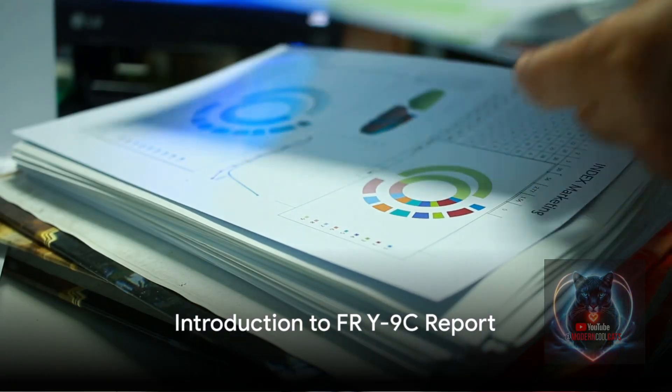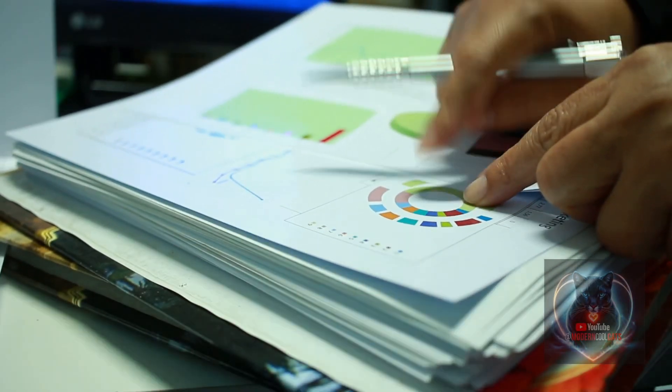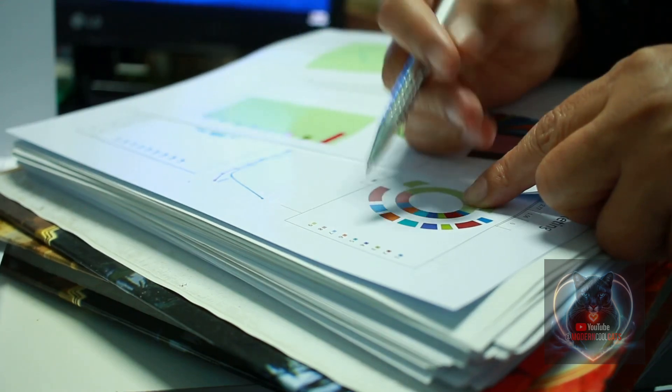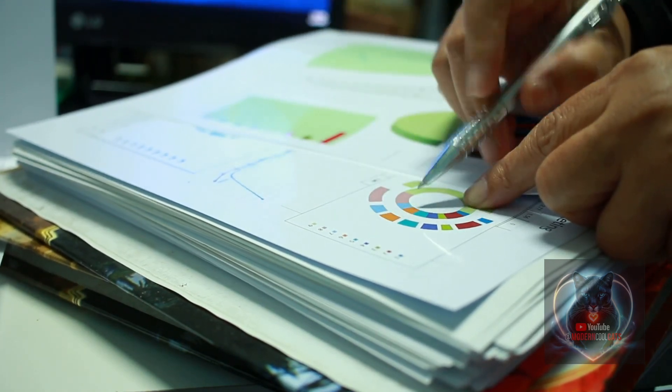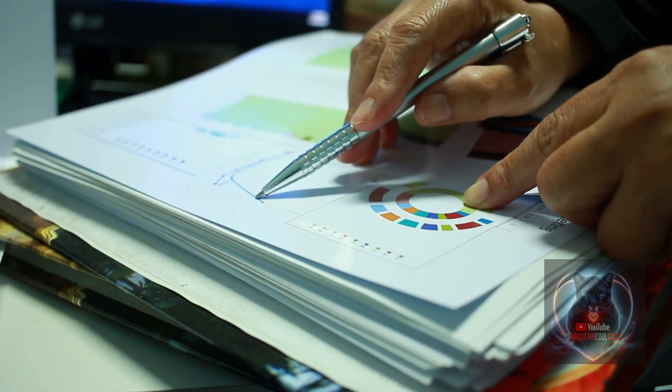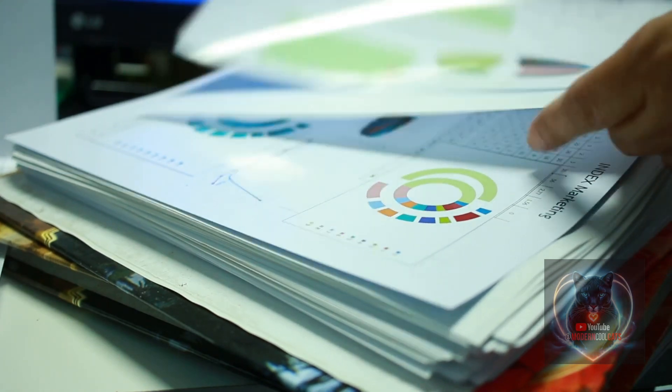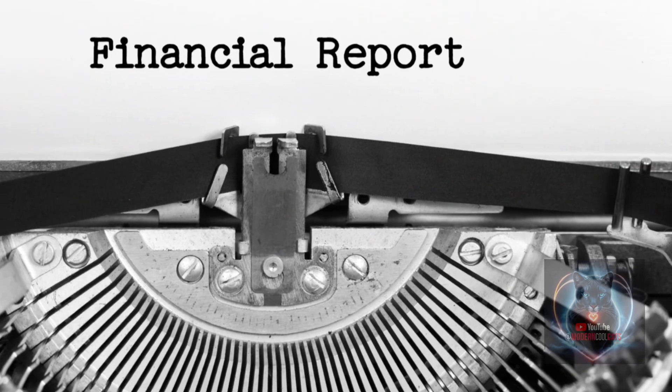In today's video, we'll be diving into the FRY9C report, a comprehensive quarterly financial statement required by the Federal Reserve for Bank Holding Companies, or BHCs, with total consolidated assets of $1 billion or more.